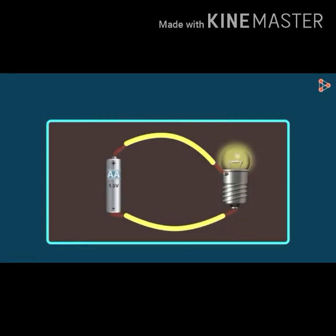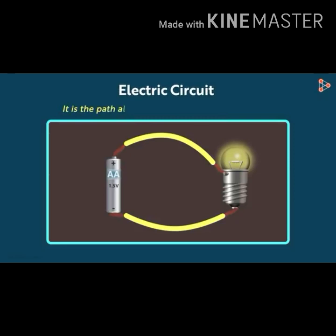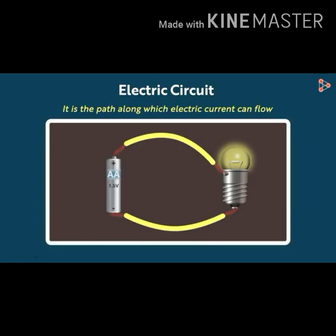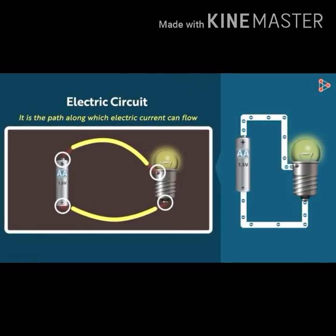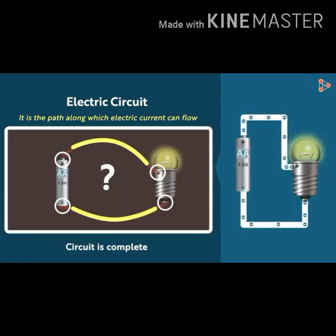The word 'circuit' is very important in this lesson — it refers to the path along which electric current flows. A closed loop is formed where all the terminals of the electric cell and the bulb are connected. The electric current flows along this closed path, and we say the electric circuit is complete.